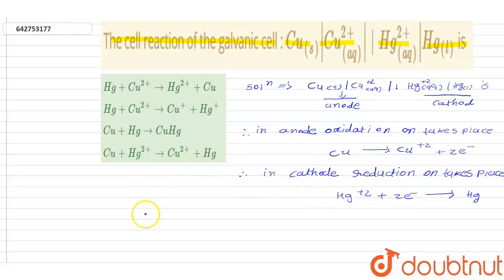So overall process is Cu plus Hg plus 2 is Cu plus 2 plus Hg.